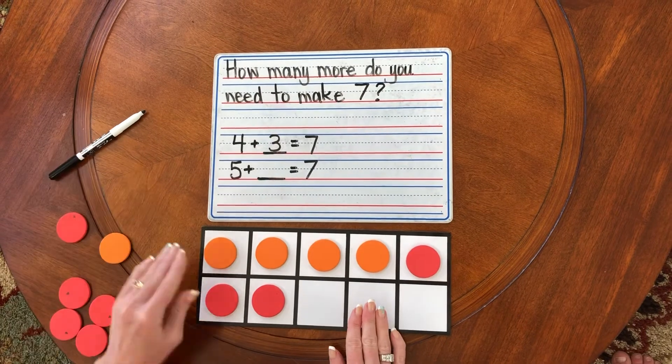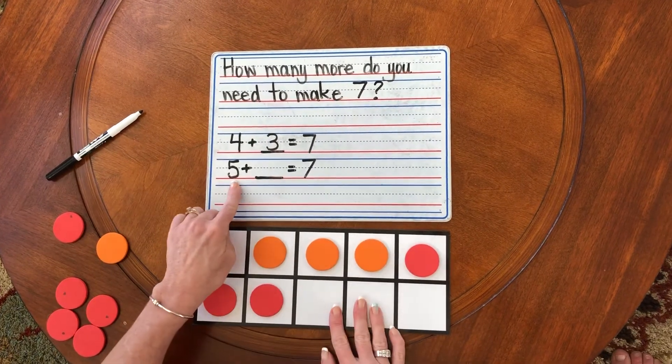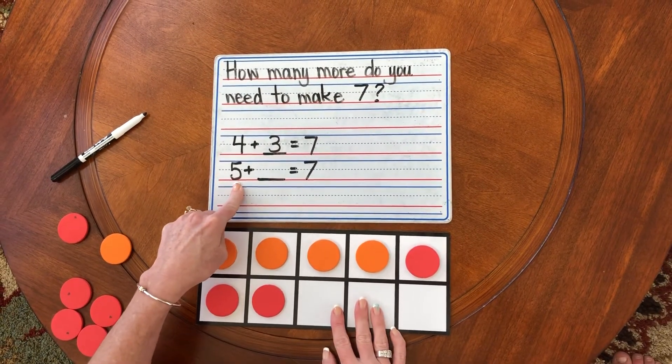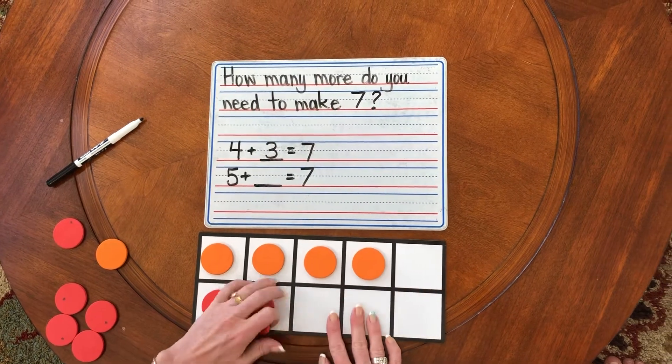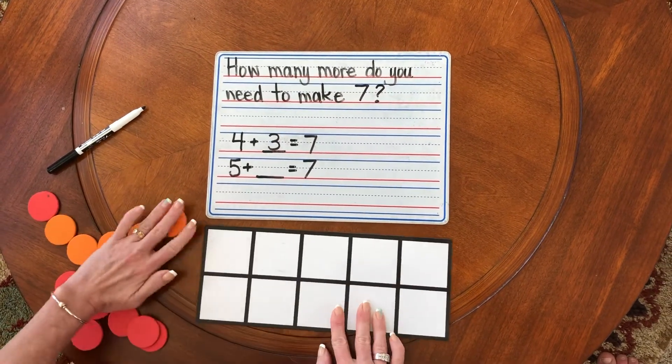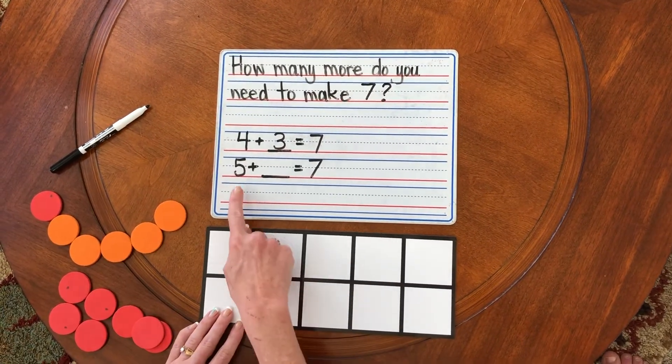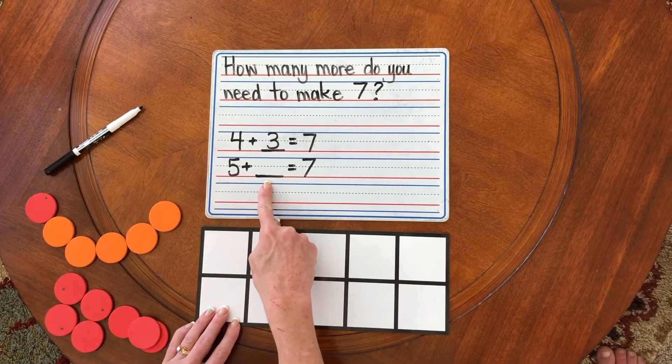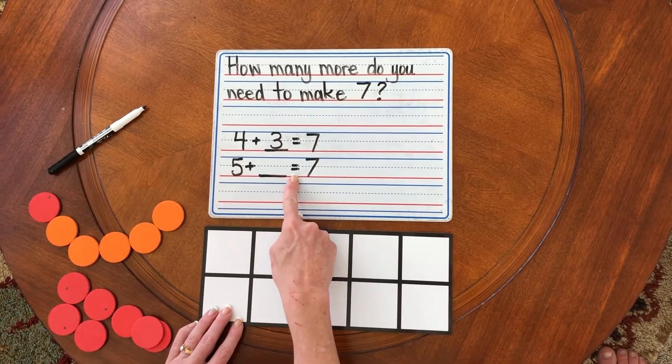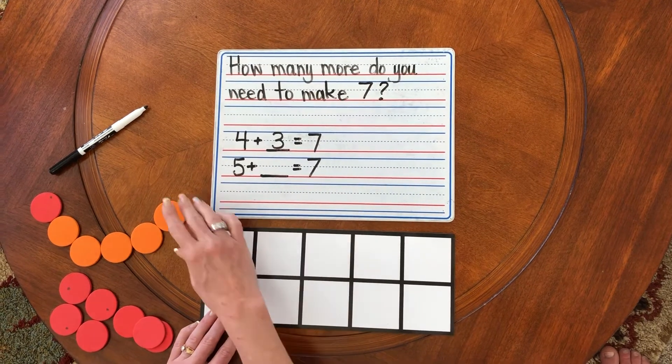Let's try a new question. We're going to start with five orange counters. Ready? Our question is five plus how many more do you need to make seven. Let's try it.